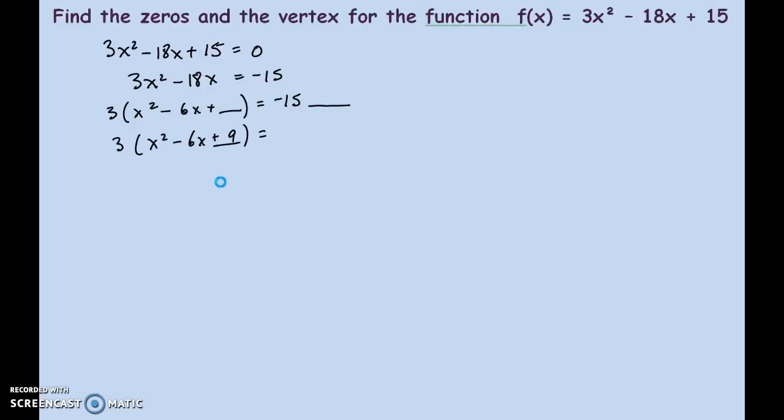But on the other side, to compensate for that adding of nine, which is multiplied by the three, you're going to have to add 27 on the other side.